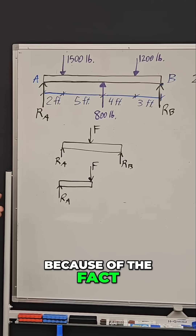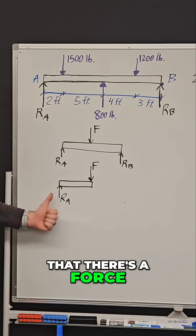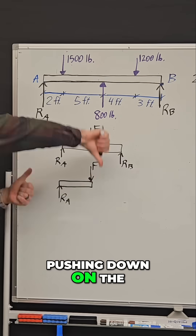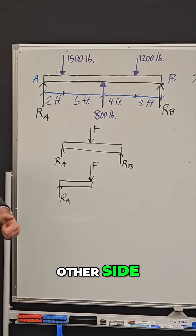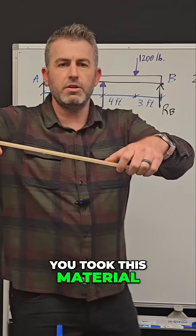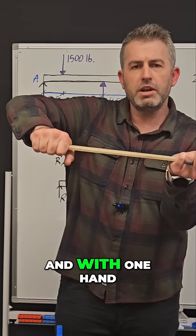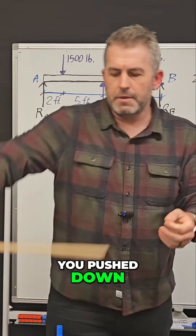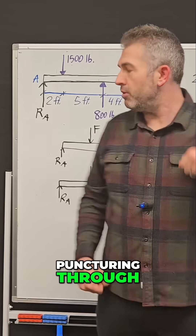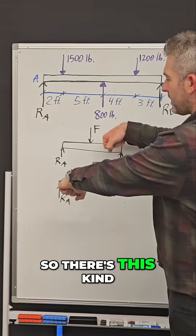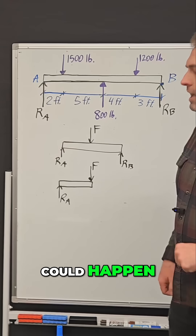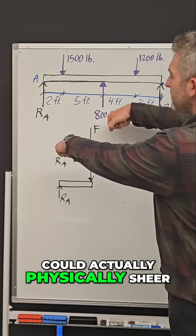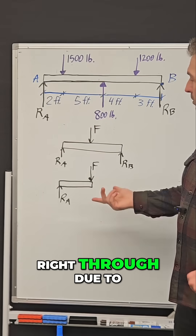Because there's a force pushing up on one side and another force pushing down on the other side, you can imagine if you took this material and with one hand you pushed up and with the other hand you pushed down, there's a danger of puncturing through. There's this kind of puncture force that could happen, and so this beam could actually physically shear right through.